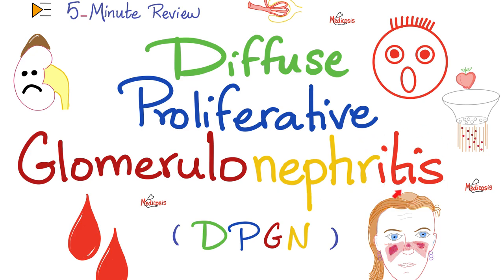If it ends in itis, it's a nephritic syndrome. This disease is nephritic and nephrotic at the same time. If it's nephrotic, you're gonna lose protein in the urine. If it's nephritic, you're gonna lose blood in the urine. And in this disease, you lose both proteins and blood in the urine.